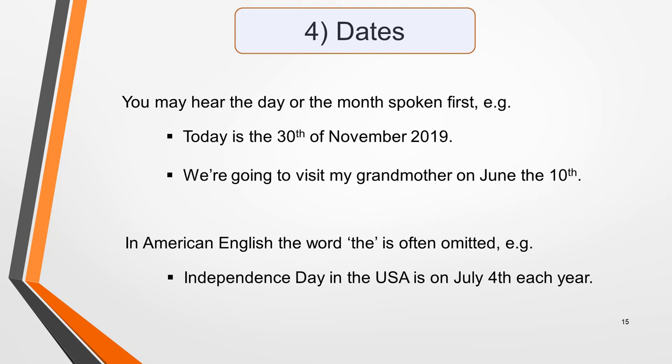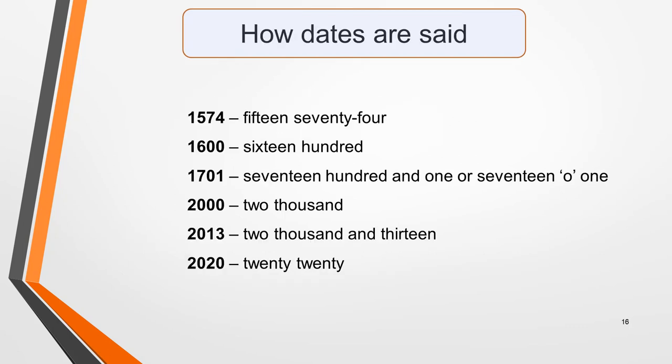Next, we come to dates. One of the biggest challenges with dates is their spelling. Make sure that you can correctly spell all the days of the week and the months of the year — remember that they always start with a capital letter. As there are a maximum of 31 days in any month, you'll also need to recognise and be able to write ordinal numbers up to the 31st. In speech, you may hear the day or the month spoken first. For example: 'Today is the 30th of November 2019' or 'We're going to visit my grandmother on June the 10th.' In American English, the word 'the' is often omitted — for example, 'Independence Day in the USA is on July 4th each year.' Also study how years are said.